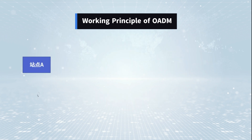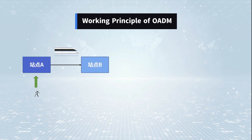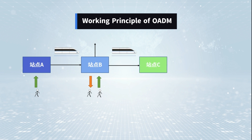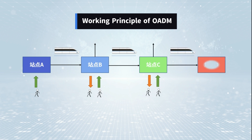Simply understood as a high-speed rail line: the train started from station A with different people. Some people get off and some get on the train at the same time, arriving at station B, and at station C, some get off and some people get on. This is the same as OADM.